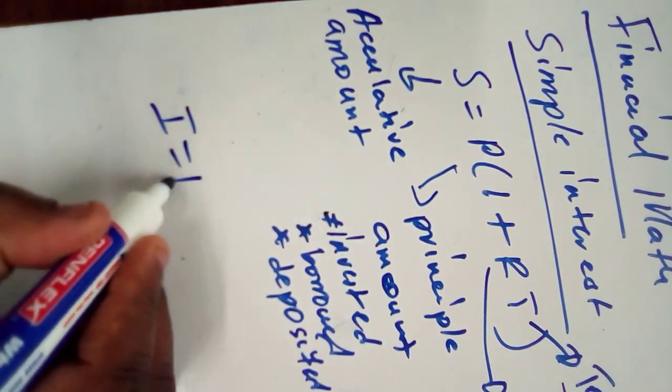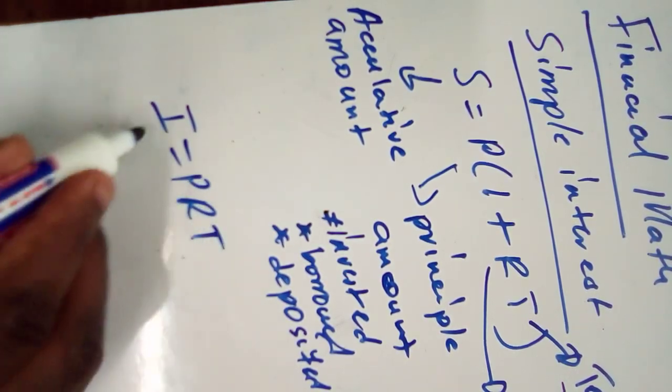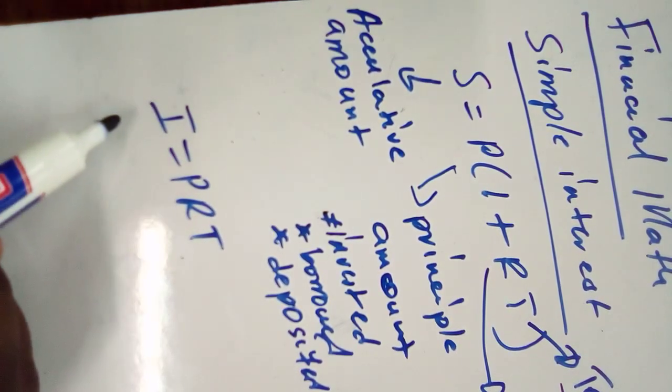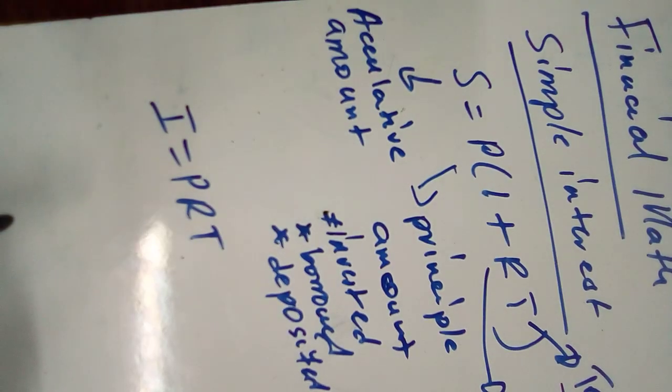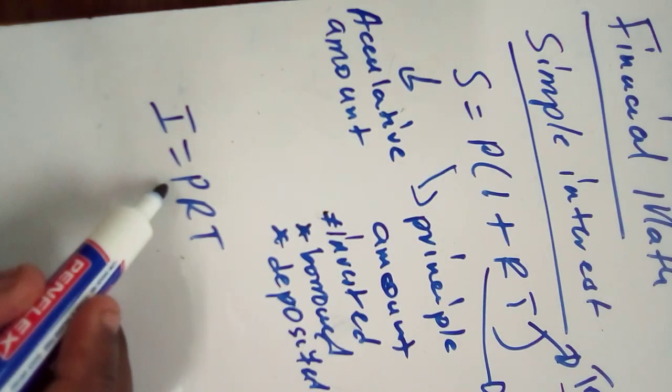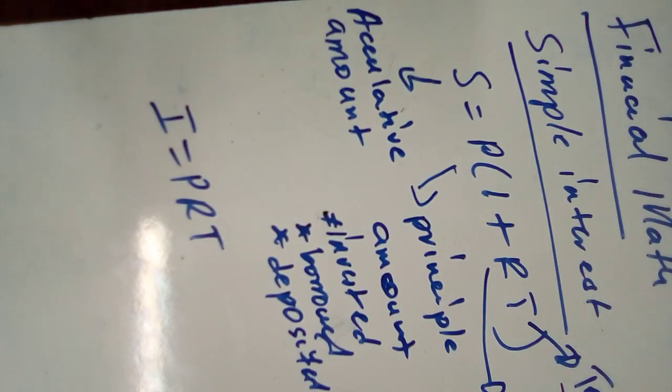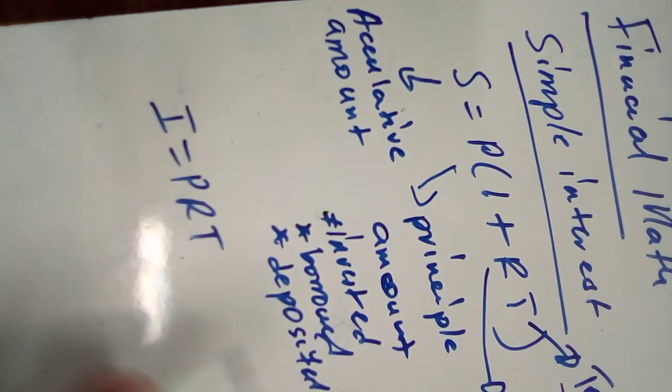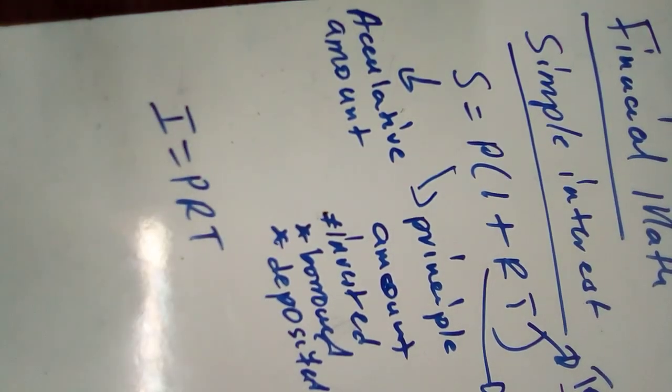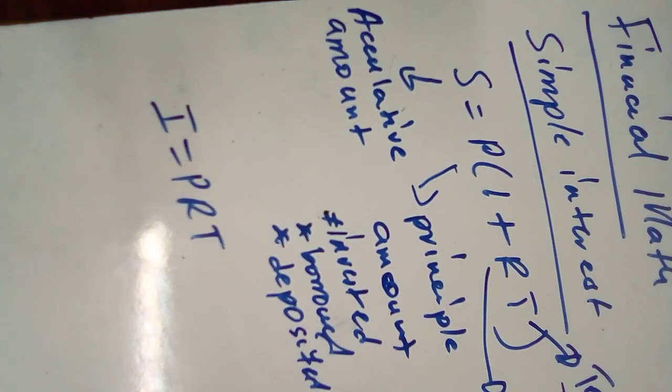You use this formula. I equals to PRT, where I is the interest that you're going to pay or you are going to receive. P is the principal amount, the money that you are borrowing or you are investing. R is the interest rate that you and the person you are borrowing from, or the bank you are investing with, agree upon. And T is the number of years you are going to invest or the number of years you are going to pay up that money.